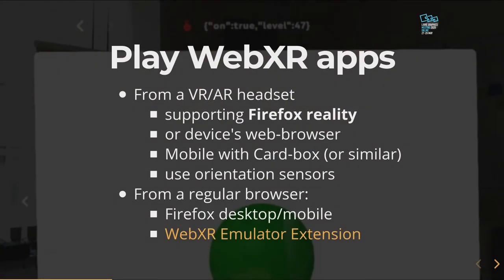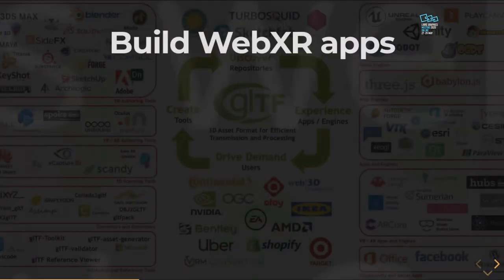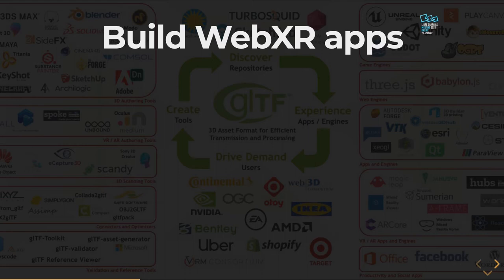How do you get into a WebXR application? If you have a VR headset it probably supports a web browser; if not you can install Firefox Reality. Even on a mobile phone you can use a Cardboard VR headset, and using the orientation sensor you can use 3D content that moves at the same speed as your head. If you're using a regular browser you can still see the 3D world but without the immersive feature. You can emulate the sensor from the VR headset using an emulator extension, which is also useful for developers creating WebXR applications.